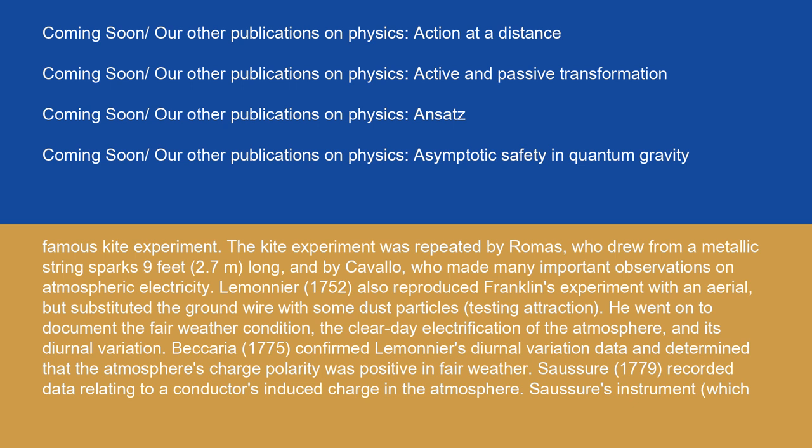He went on to document the fair weather condition, the clear-day electrification of the atmosphere, and its diurnal variation. Vicaria (1775) confirmed Le Monnier's diurnal variation data, and determined that the atmosphere's charge polarity was positive in fair weather.